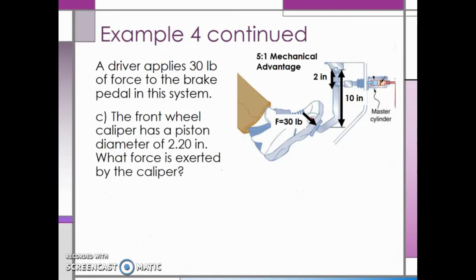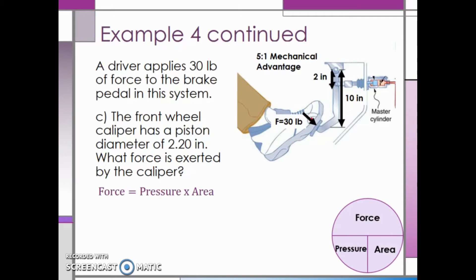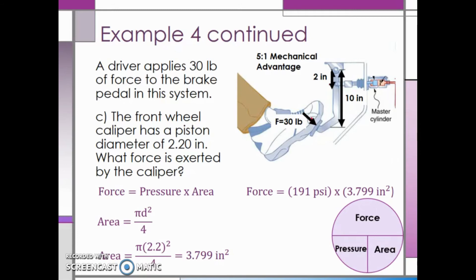Now, we know the front wheel caliper has a piston diameter of 2.20 inches. We want to find the force exerted by the caliper. Force is equal to pressure multiplied by area. We aren't specifically given the area, so we have to find the area of the front wheel caliper piston. Area equals pi multiplied by the diameter squared divided by 4. Substituting in 2.20 inches, the area of the piston is 3.799 square inches. We can find the force by taking the pressure of 191 psi and multiplying by 3.799 square inches. Pressure remains constant throughout a hydraulic system, so we use the same pressure. This gives us a force of 726 pounds.